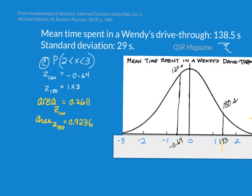So let's shade in those two areas. The area under the curve less than the z-score of negative 0.64, or 120 seconds, would be that area. And then our second area would be the area to the left of 180 seconds, which has a z-score of 1.43, as we see. So I'm going to shade all the area to the left, this way.